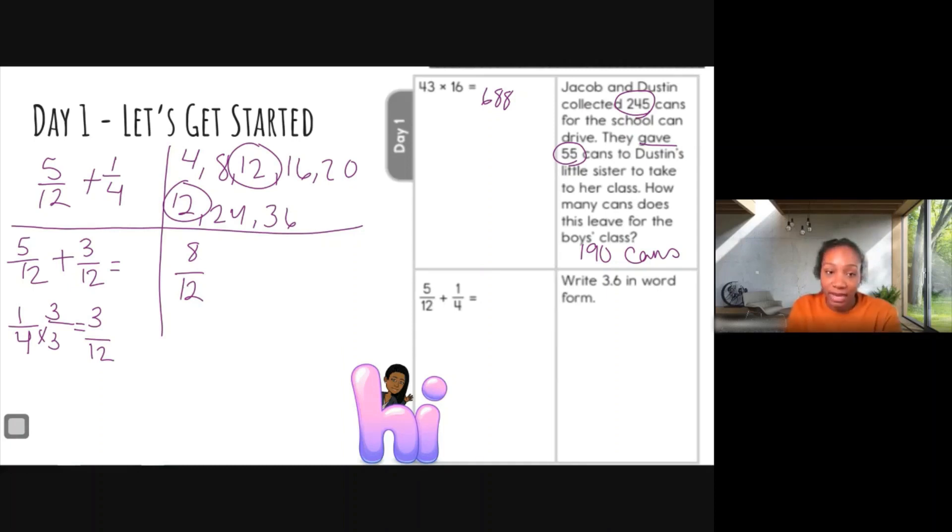What number goes into both 8 and 12? Well, look up here, 4 has 8 and 12 in it. So that is, I want to go ahead and divide by 4. Okay, 8 divided by 4, that's going to give me 2, and 12 divided by 4 is going to give me 3, and that is my final answer.